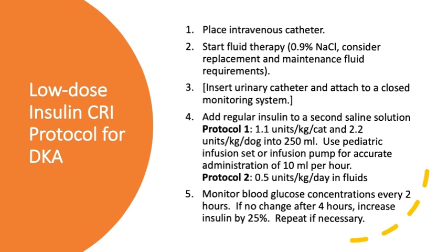For a low-dose concentrated infusion of insulin protocol for DKA, distinguishing between dogs and cats: place an IV catheter, start your saline, and put in a urinary catheter if possible to monitor diuresis and ensure renal function continues. One of the biggest reasons animals in DKA die is acute renal failure. Protocol one: 1.1 units per kilogram for cats, 2.2 units per kilogram for dogs, into 250 milliliters of saline, administered at 10 mL per hour using a pediatric infusion set or infusion pump.